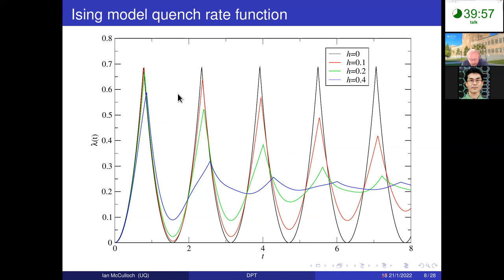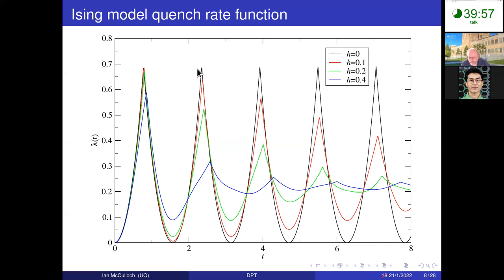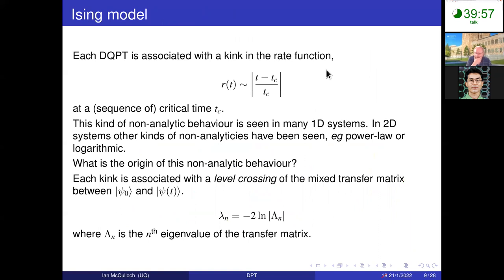Even if we quench to a finite value of the field, we still see periodic behavior, although the value of the rate function changes. The cusps remain at perfectly periodic intervals. This is really what we mean by a dynamical quantum critical point: a point where we get non-analytic behavior seen in the derivatives of the return rate. Each DQPT is associated with a kink in this rate function, and we can treat it very analogously to a conventional or quantum critical point with power-law scaling.